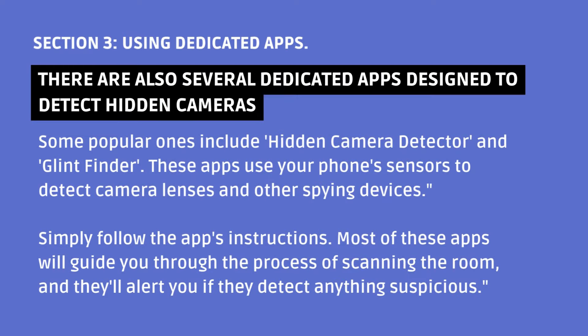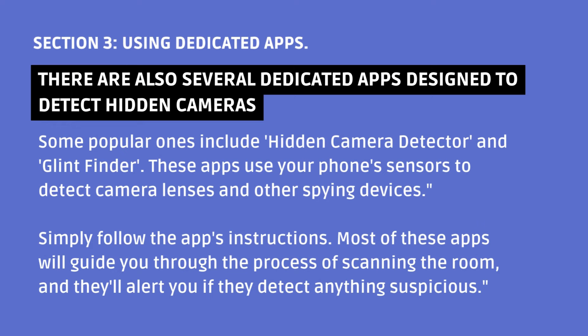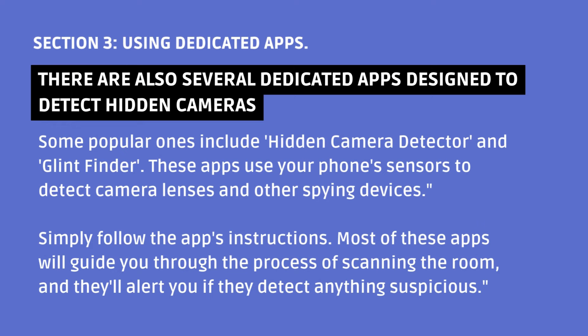Section 3: Using Dedicated Apps. There are also several dedicated apps designed to detect hidden cameras. Some popular ones include Hidden Camera Detector and Glint Finder. These apps use your phone's sensors to detect camera lenses and other spying devices. Simply follow the app's instructions — most of these apps will guide you through the process of scanning the room, and they'll alert you if they detect anything suspicious.